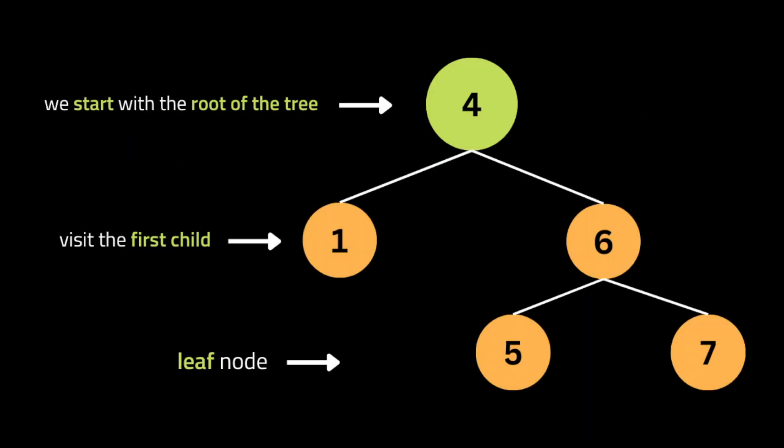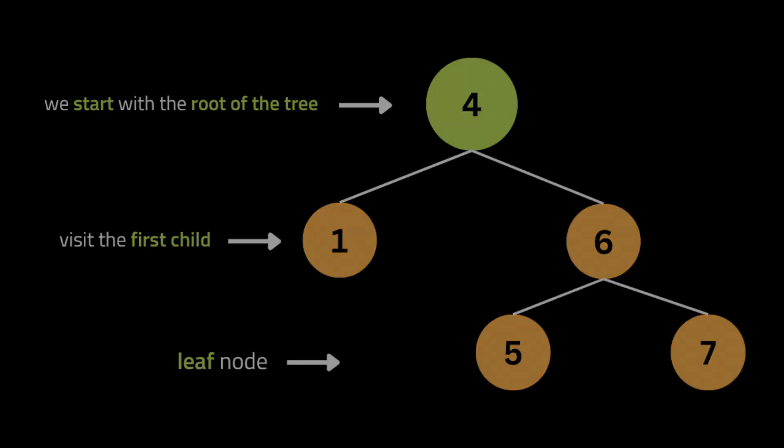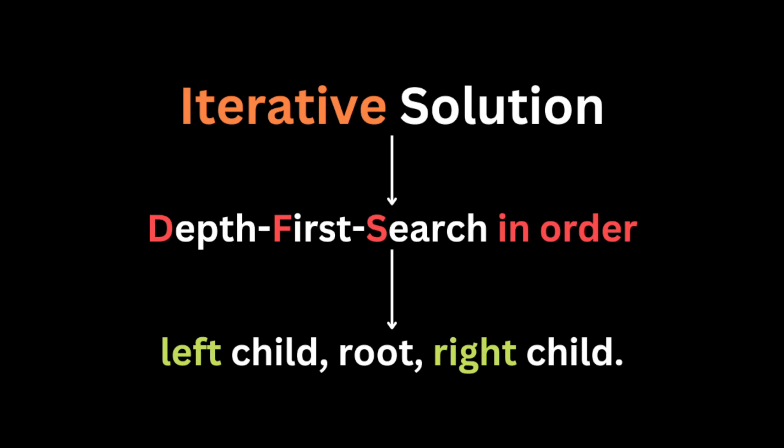Depth-first search involves exploring as far as possible along each branch before backtracking. We start with the root of the tree, visit the first child of the current node, and so on until we reach a leaf node — a node with no children.